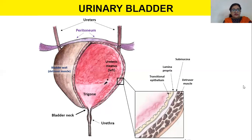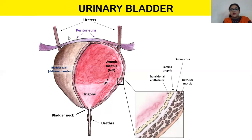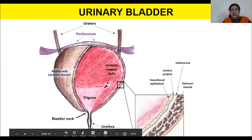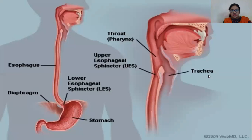In the urinary bladder, muscarinic receptor activation produces urinary incontinence. The ureters and bladder wall contract while the sphincter relaxes, pushing urine out through the bladder.